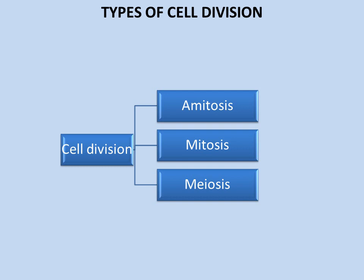Types of cell division: cell division is mainly divided into three types. Number one is amitosis, number two is mitosis, and number three is meiosis. Amitosis occurs in prokaryotic cells; mitosis and meiosis occur in eukaryotic cells.